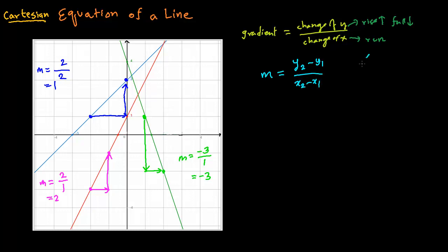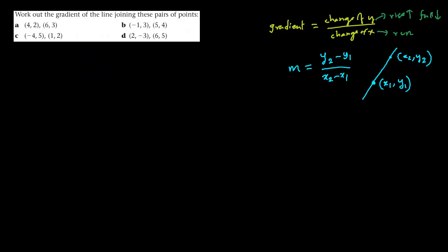That means if we have a line passing through two points — one point has coordinates (x1, y1) and the other has coordinates (x2, y2) — you can find the gradient. Let's do some examples. The first example: two points are given, (4, 2) and (6, 3). Gradient equals the change of y: 3 minus 2, divided by the change of x: 6 minus 4. That gives 1 divided by 2, so the gradient is one half. For every two units of x, y increases by one unit.